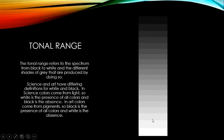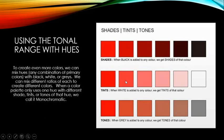By using our tonal range and mixing it with pure hues, we can create many more colors. Any combination of primary colors mixed with black, white, or gray at different ratios creates different colors. When a palette uses only one hue with different shades, tints, and tones, we call it monochromatic.